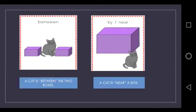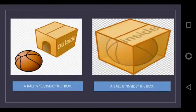In the next picture, a cat is near a box. The word near tells us where the cat is. A cat is near a box.